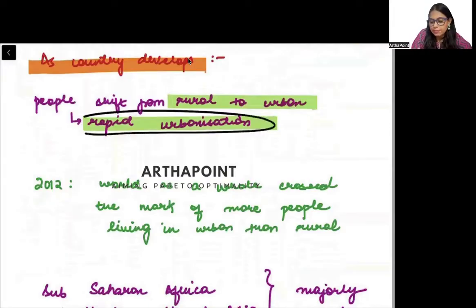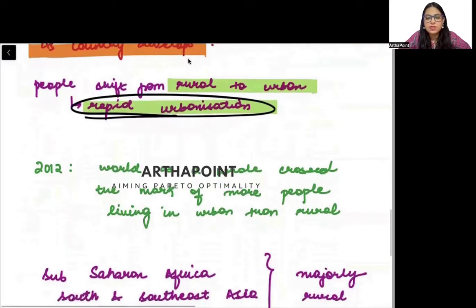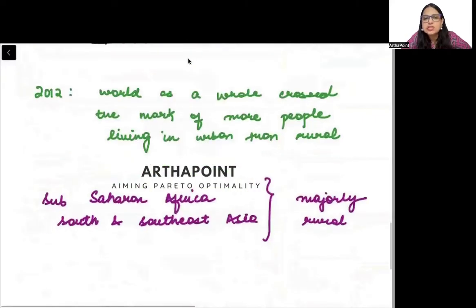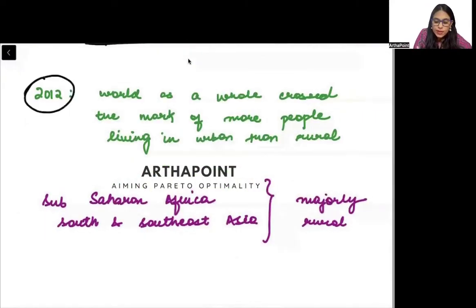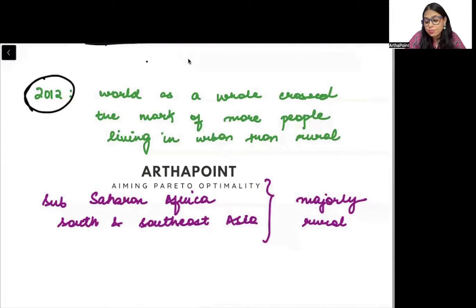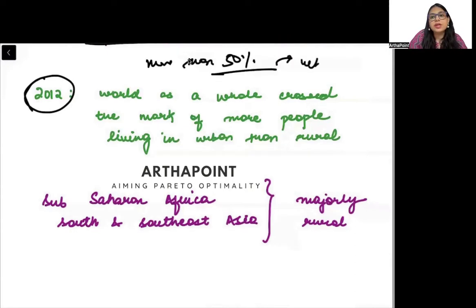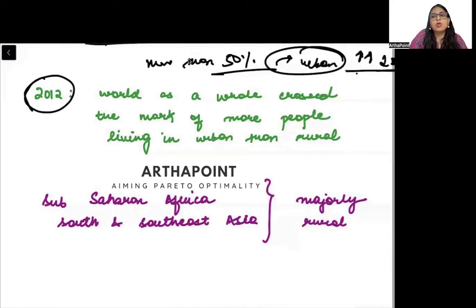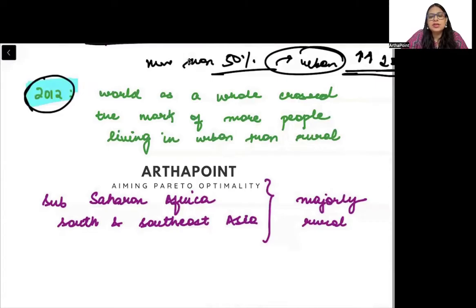The process of rapid urbanization then starts. In 2012, for the first time in the world as a whole, more than 50% of people were living in the urban area. So in 2012, the urban area population was more than the rural area population for the first time globally.